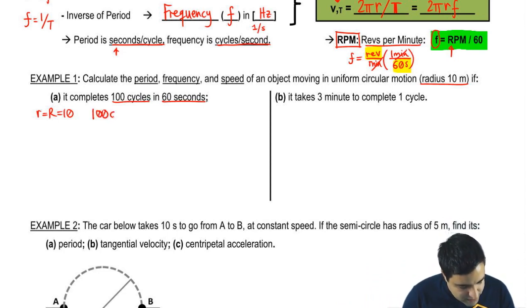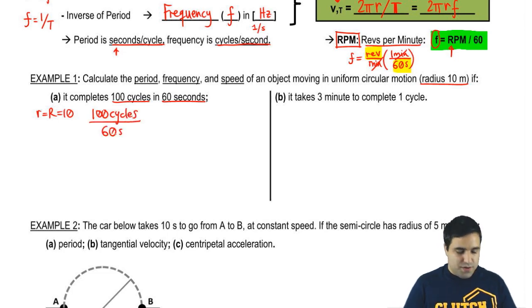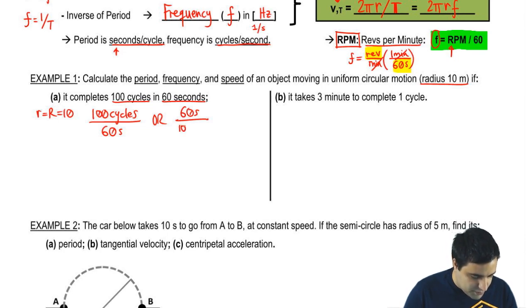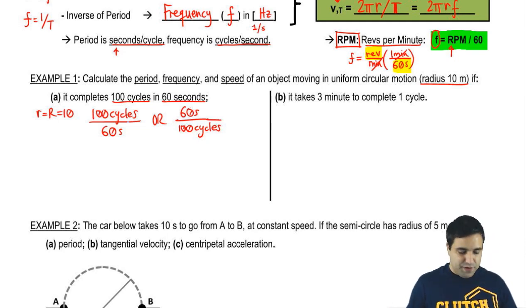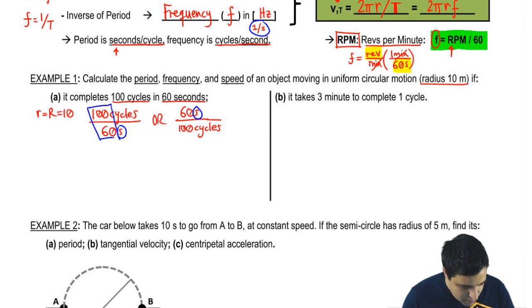Now there's two ways you can write this. 100 cycles in 60 seconds means you're going to divide one by the other. Or you could write this backwards. You could have written 60 seconds for 100 cycles. Once you're here, it's pretty easy to figure out which one is which. One of these is the period. The other one is going to be the frequency. Here, seconds is in the bottom. And when seconds is in the bottom, I have frequency. Here, I have seconds at the top, so this is my period. So this fraction right here, 100 over 60 is my frequency.